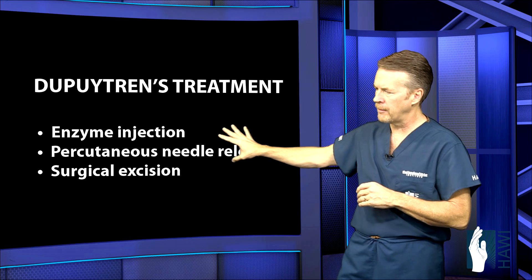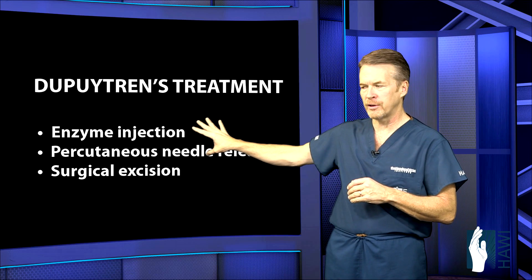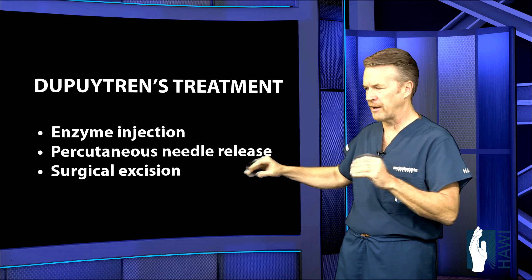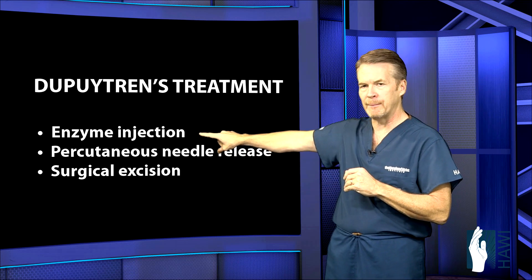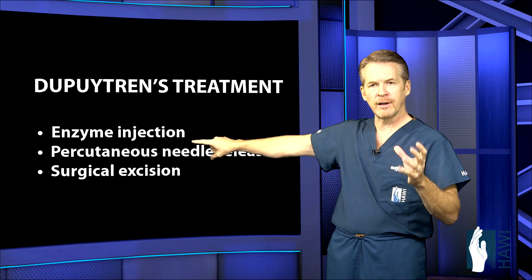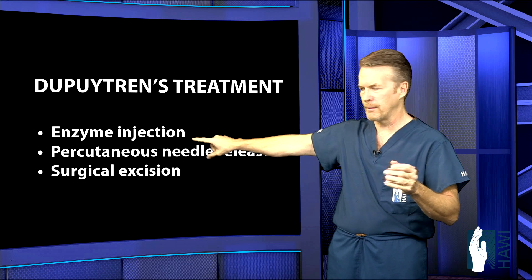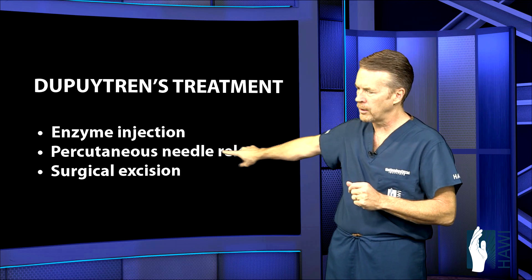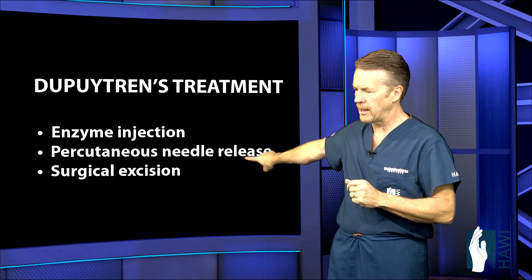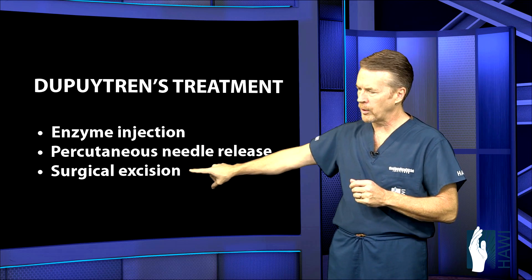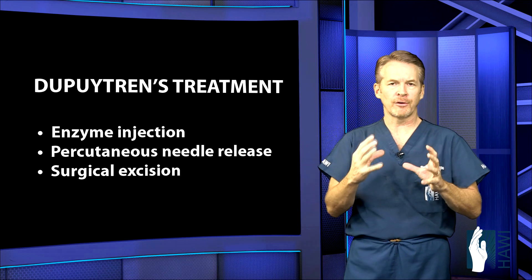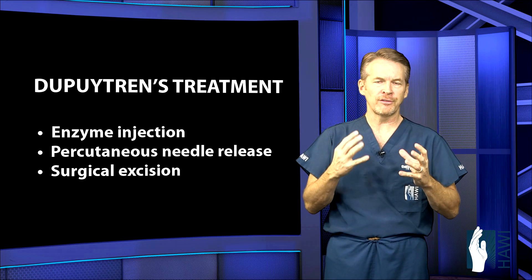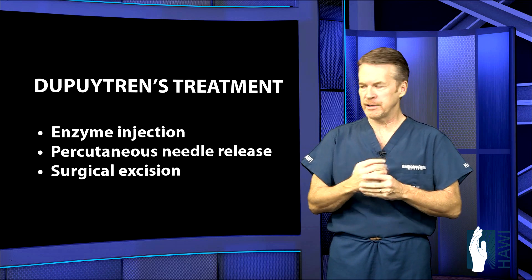Let's take a look now at the treatment for Dupuytren's disease. We're going to concentrate on the surgery aspect, but to mention, there are two other common treatments many surgeons may perform in the office: one is an enzyme injection that there are some indications for, and a percutaneous needle release. But today we're going to concentrate on what many surgeons still do — a surgical excision of this thickened fascia.